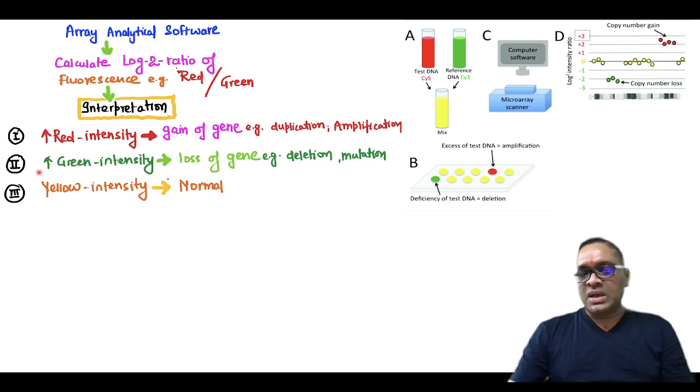If you find more green intensity, that is loss of gene because of deletion or mutation. You can see this green color is loss of gene. And yellow intensity means both are in normal proportion, so they are normal. All the yellow color are normal. On the graph also you can see yellow color is normal, red color is gain of gene, and green color is loss of gene.